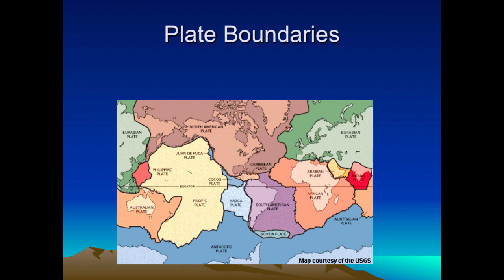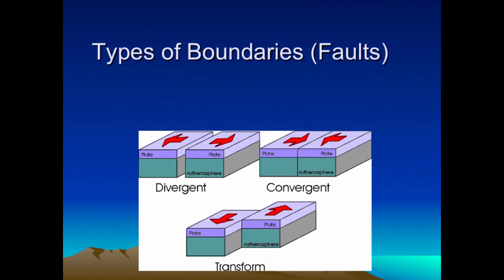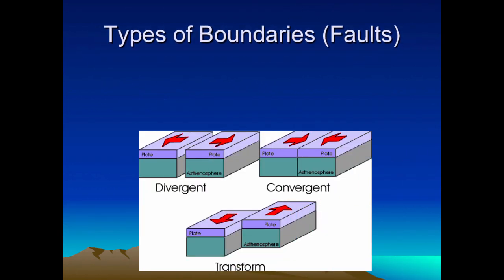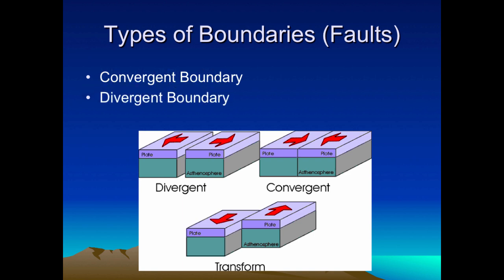Here are our plate boundaries — we have something color-coded just like this in our journal. The cracks in these boundaries are called faults. There are three types of boundaries: convergent, when the plates move together; divergent, when the plates move apart; and transform, when the plates slide horizontally past each other.